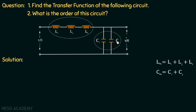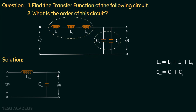If we convert this circuit to its equivalent circuit, we get a circuit in which L_eq = L1 + L2 + L3 and C_eq = C1 + C2. The order of this equivalent circuit is equal to two, because only two effective energy storing elements are present.